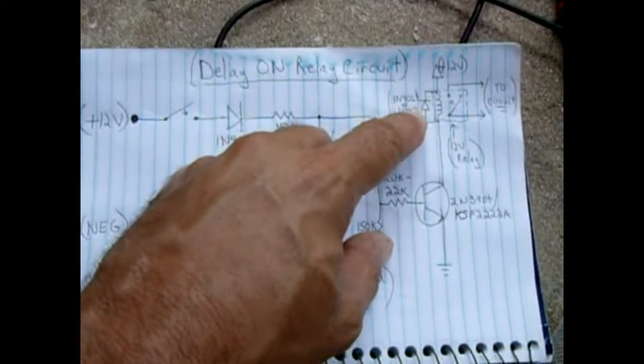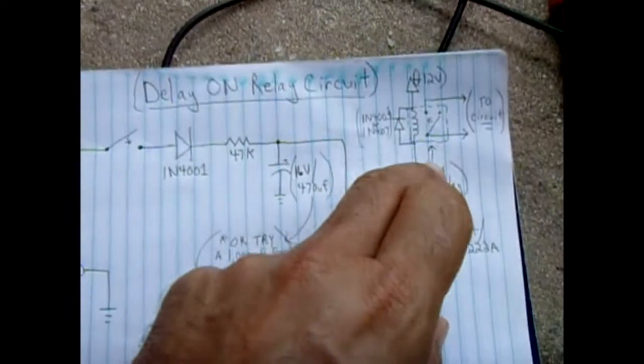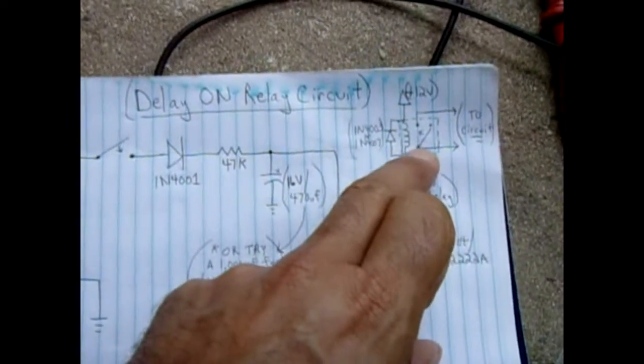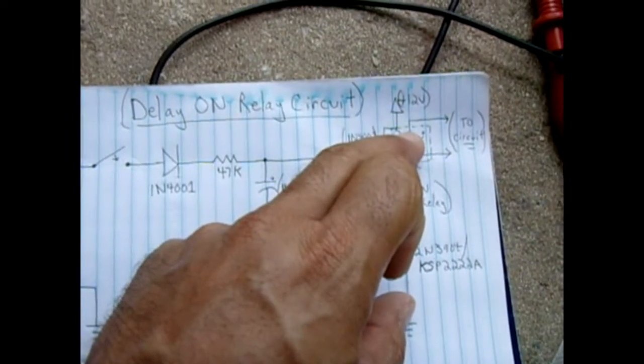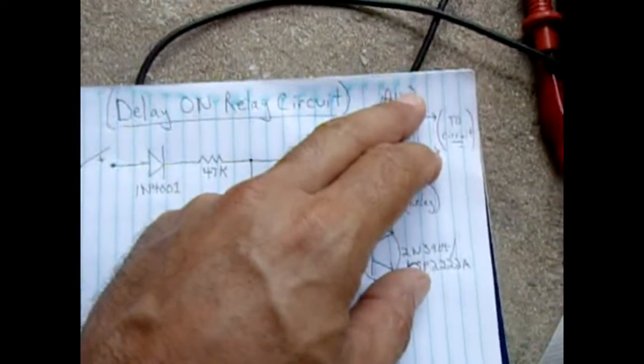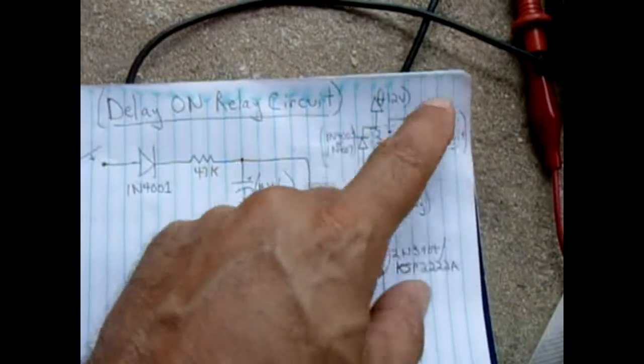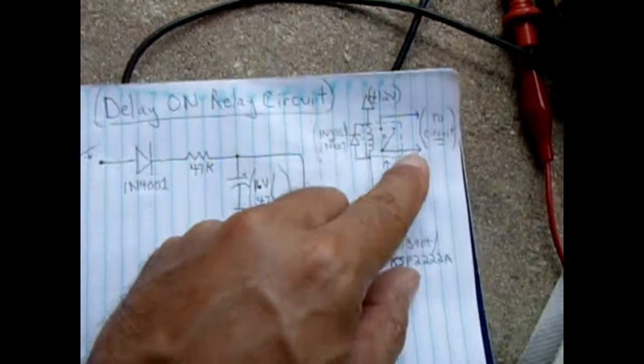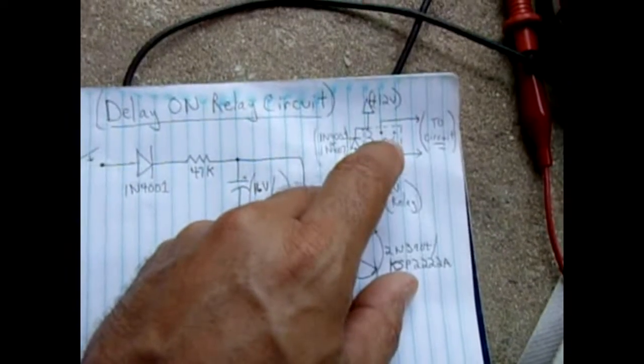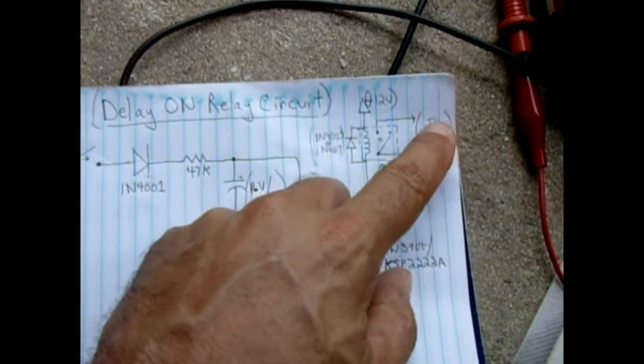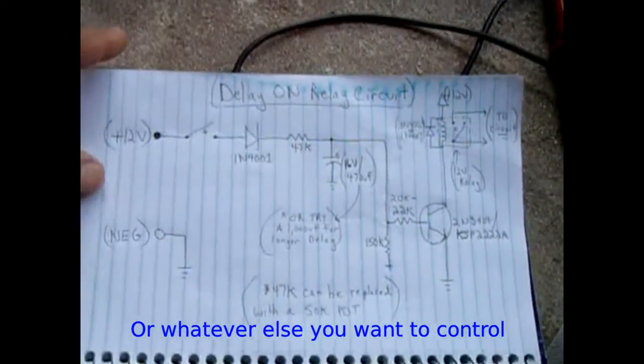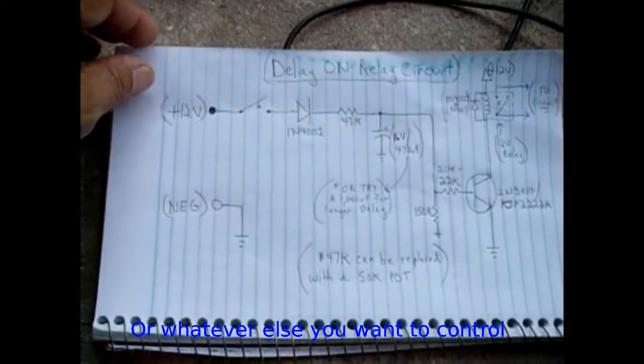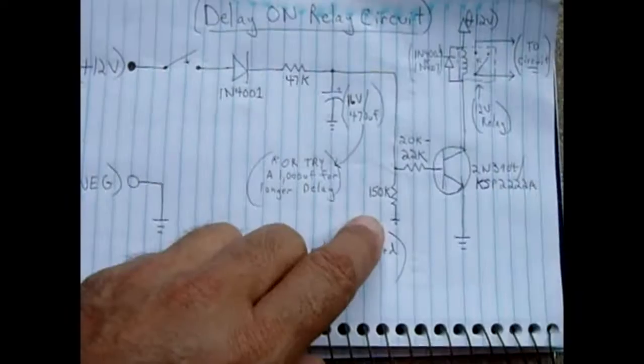The relay contacts: you have a common and a normally open, and those are the contacts that would feed your light. So you'd have 12 volt battery power going into the common terminal, which is here, and the normally open terminal would feed to your lights. Simple circuit with many uses for it.